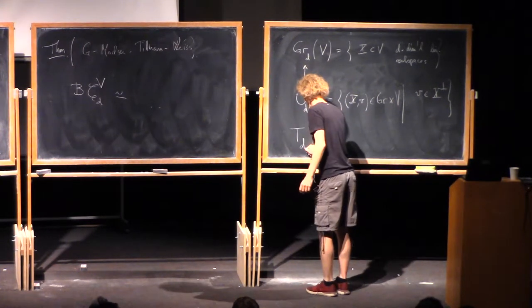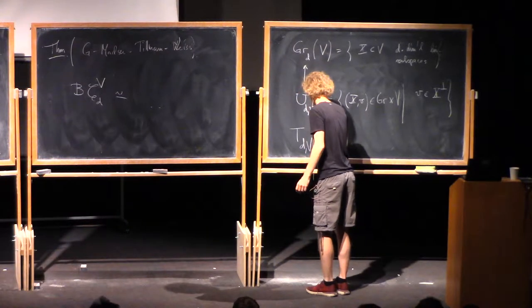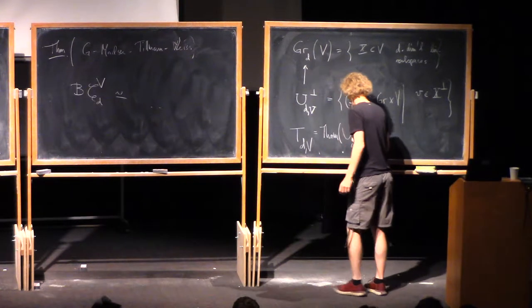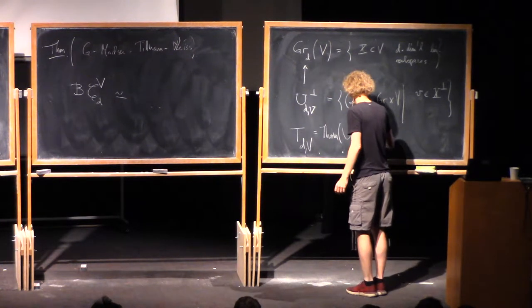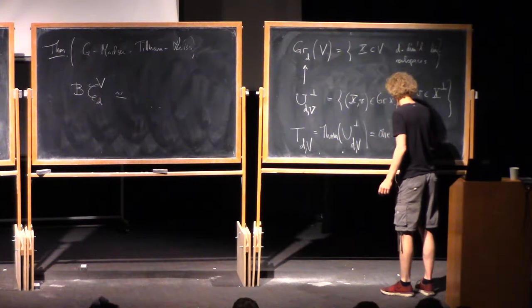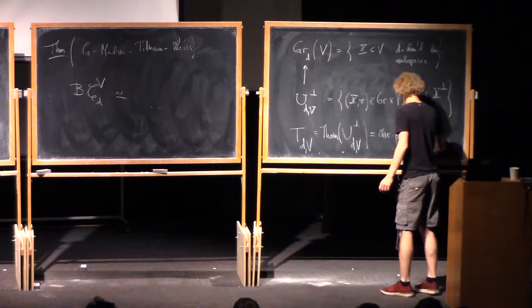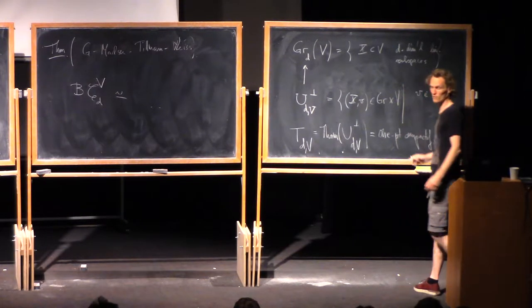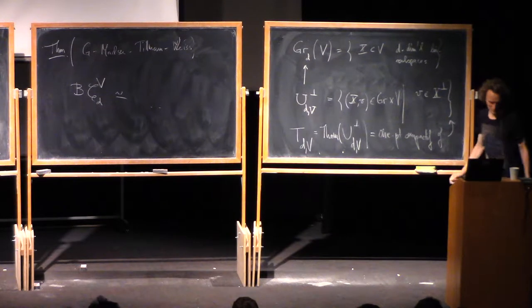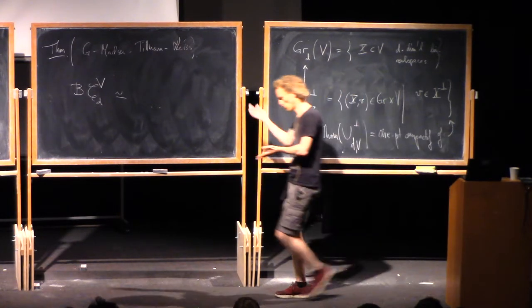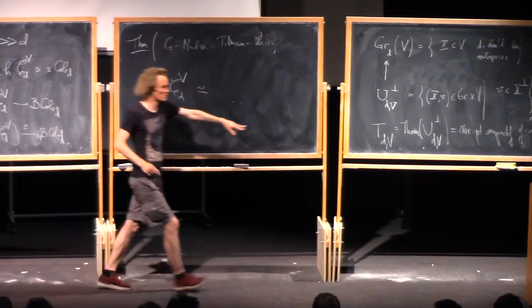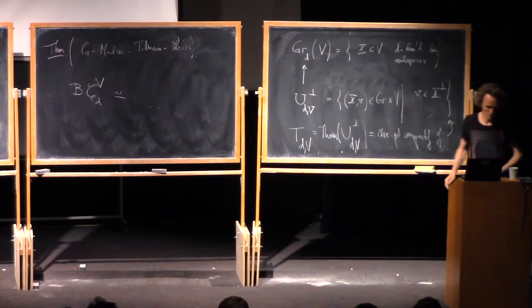And then T(d,V) is a Thom space of this bundle. So that means the one-point compactification of the total space. Or up to homeomorphism, you can also take the disk bundle and take the quotient by the sphere bundle. So this is a space, finite dimensional CW complex.